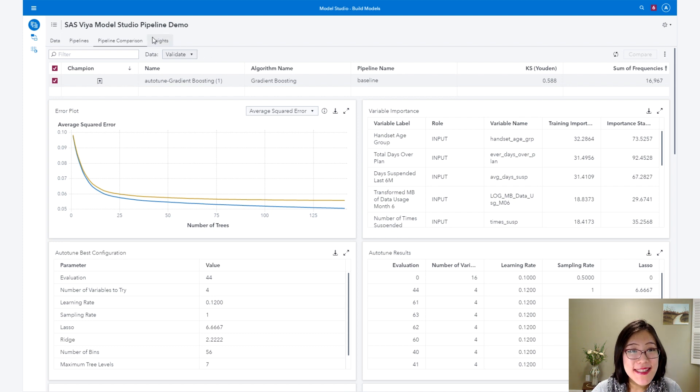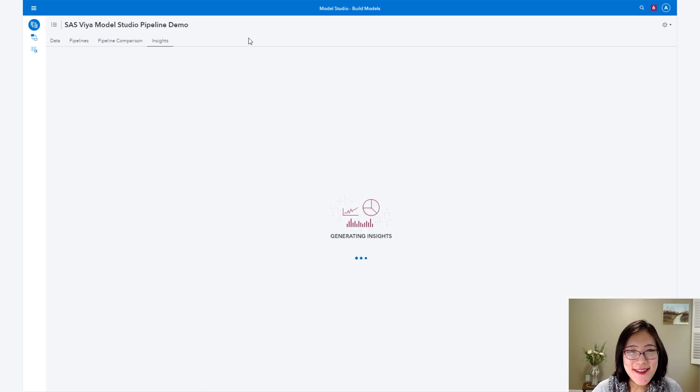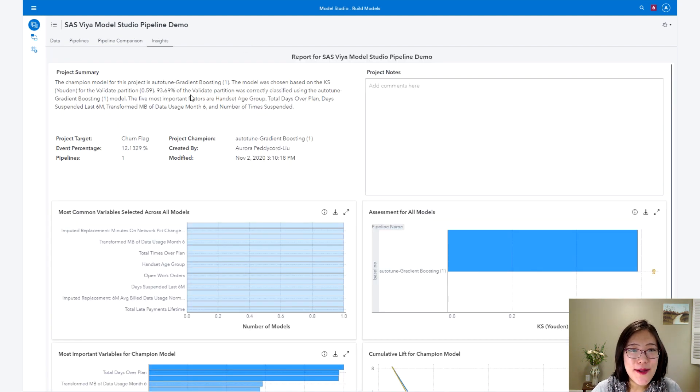You can also see this Insights tab, which is like an auto-writing report. They show you the summary of this project, what is the best model, and then some statistics. And you can add your own notes, so you can summarize your project as a report. Moreover, once you find your best procedure the systematic way we describe in step three, you can also save it in the shared spot for others to use. You can also deploy it in another tool called SAS Model Manager that is not the focus of today.